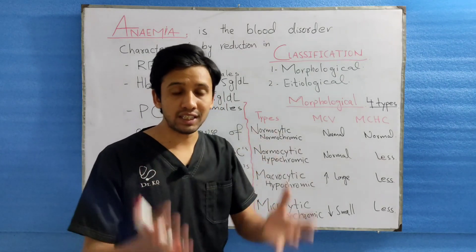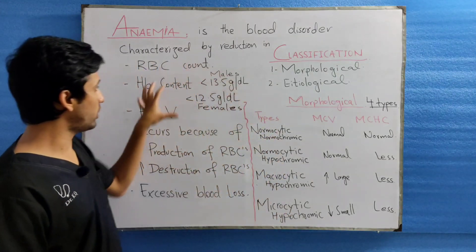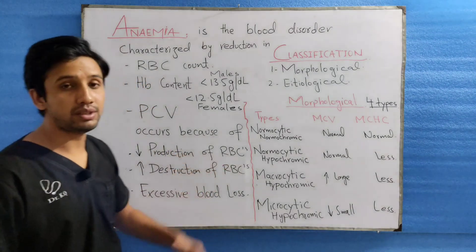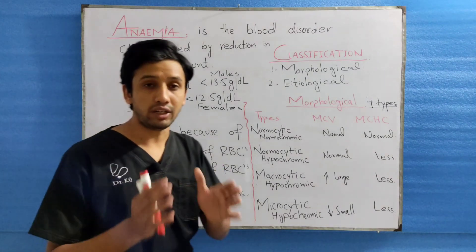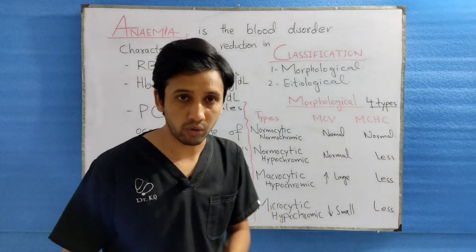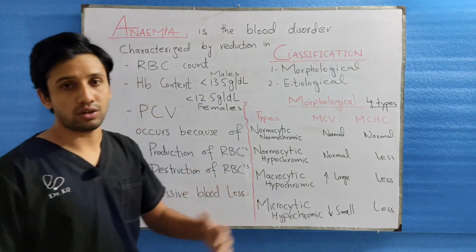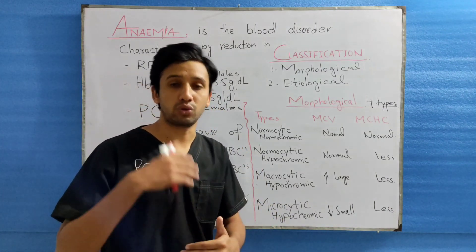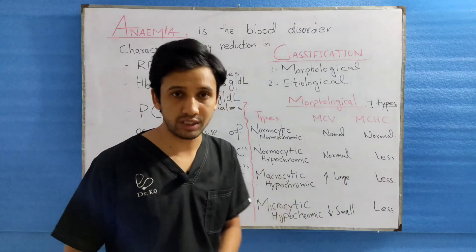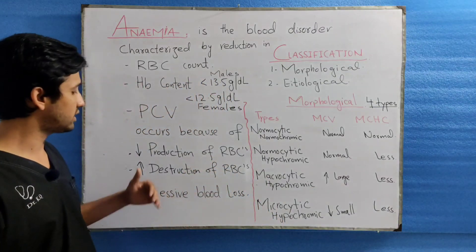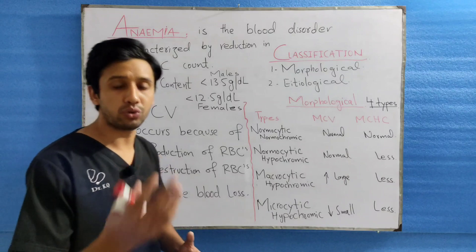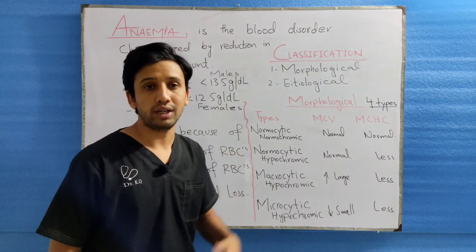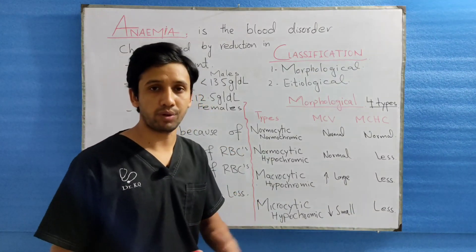The reason behind the reduction of these contents is either decreased production of the RBC, which is occurring in the bone marrow, or increased destruction of the RBC, which may occur due to pathological conditions. The third cause is excessive blood loss, which may be due to trauma or internal bleeding of the human body.